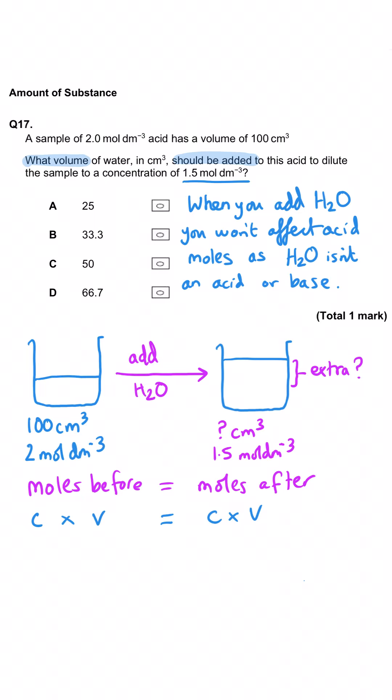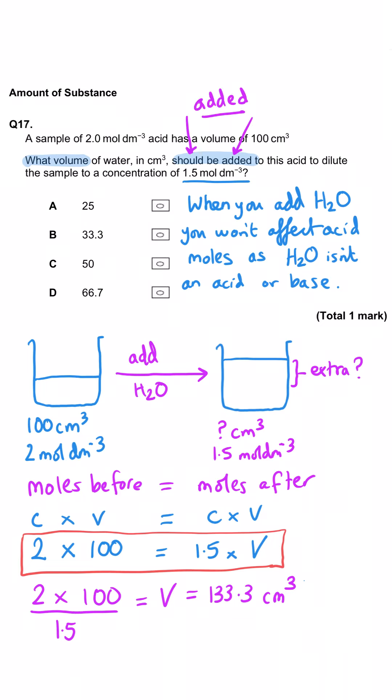We substitute the concentration of 2 and volume of 100. We can cut a corner by not dividing by 1,000 to turn it into dm cubed because we're not asked for moles and this is only a one-mark question. So 2 multiplied by 100 equals the concentration afterwards, 1.5, times its volume. When you rearrange, the final volume is 133.3 cm cubed. The question asks what volume are we adding. We started with 100, so we must have added 33.3 cm cubed to bring it up to this volume. B is the correct answer.